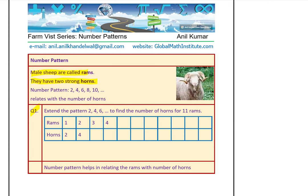Let's do it together. In the first row, I've written Rams: number of Rams — one, two, three, four. Let's extend this: five, six, seven, eight, nine, ten, and eleven. Now let us write down the number of horns for the Rams. Each Ram has a pair of horns — that means two horns. So one Ram has two horns, two will have four, three will have six, four will have eight. We're basically doubling the numbers: five will have ten, six will have twelve, seven will have fourteen, eight will have sixteen, nine will have eighteen, ten will be twenty, eleven will be twenty-two. So eleven Rams will have twenty-two horns in all.